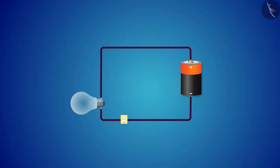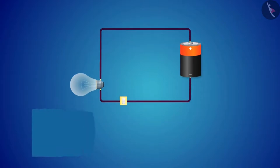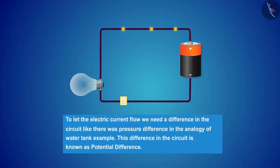Electricity is also like this tank example. To let the electric current flow, we need a difference in the circuit, like there was a pressure difference in the analogy of water tank example. This difference in the circuit is known as potential difference.